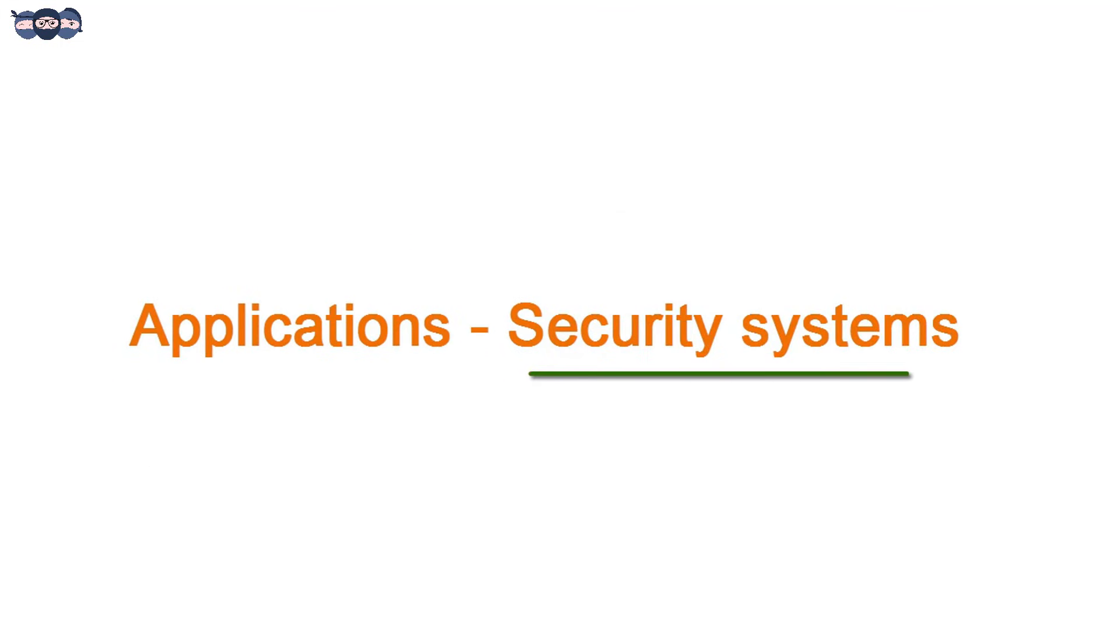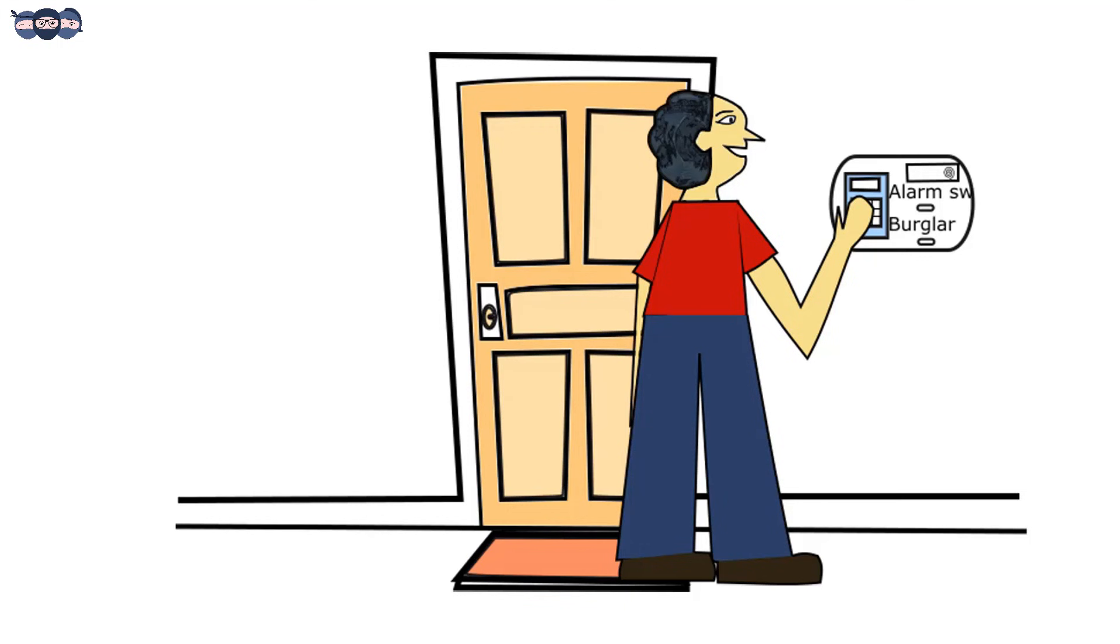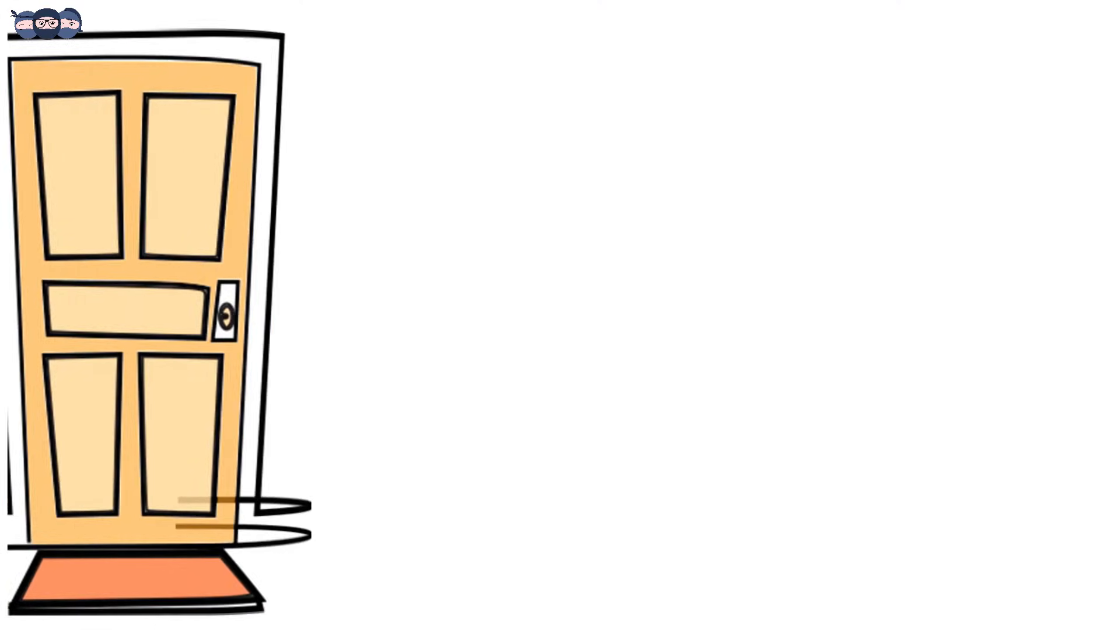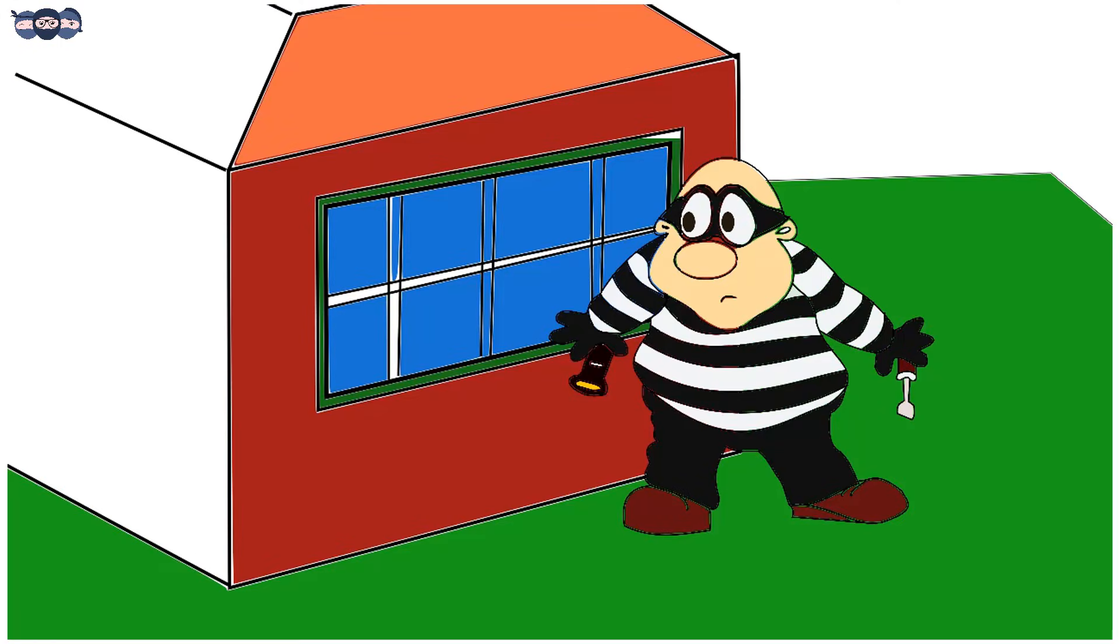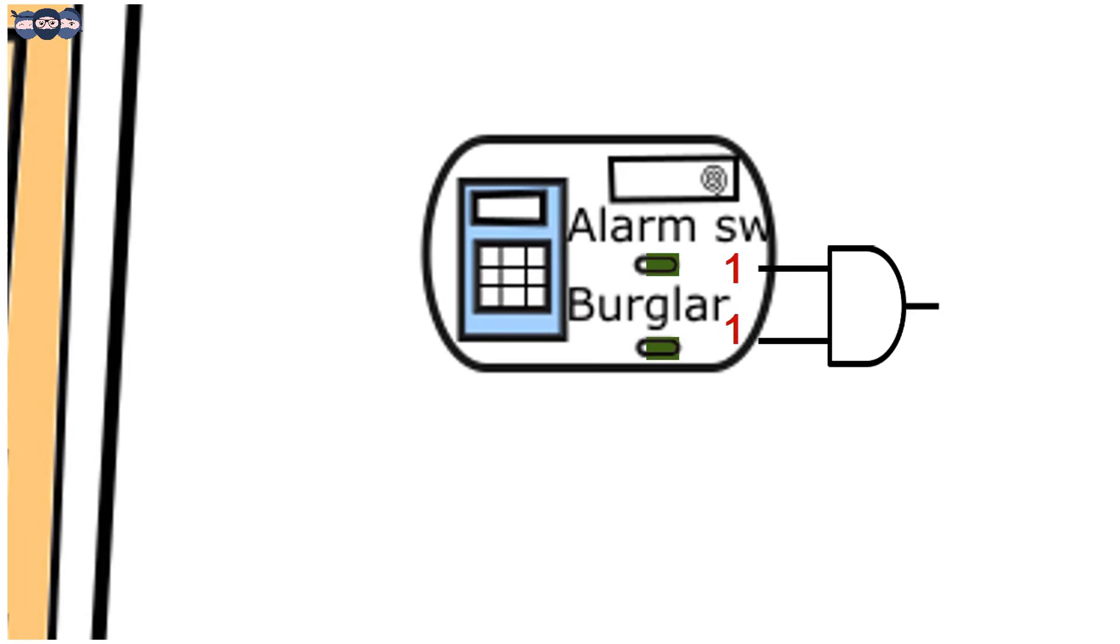AND gate finds application in security systems such as burglar's alarm. Suppose you have to leave the house and keep the house secure. You need to turn on the alarm switch. This turns the first input of AND gate as high. If a burglar tries to enter the house, the person sensor detects a logic 1. This goes to second input of AND gate. When both the inputs are high, the output of AND gate is high which sets the alarm on.